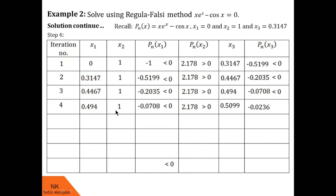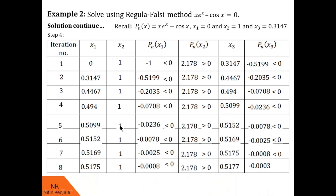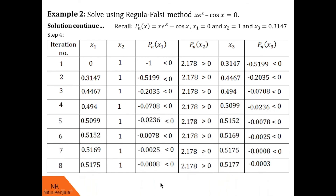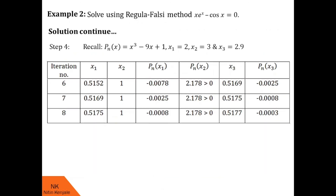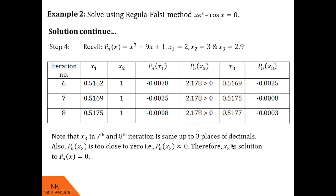You can pause the video and check these calculations on your own. After eight iterations, we see the solution is matching up to three decimal places. In iteration 7 the solution is 0.5175 and in iteration 8 the solution is 0.5177. These two solutions match up to three decimal places, so we can say the solution to the given equation is x = 0.517, correct to three decimal places.